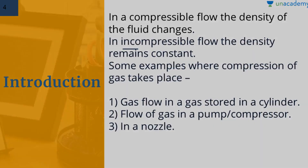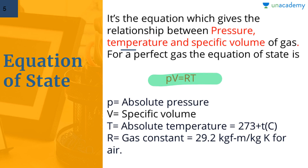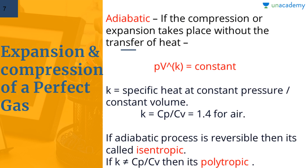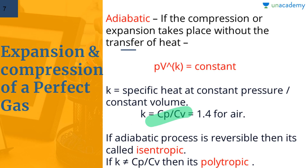To summarize: for a perfect gas we have the relationship PV = RT, where T is in Kelvin (273 + °C) and R = 29.2 kgf or 287 J/kg·K. An isothermal process obeys Boyle's Law: PV = constant. The adiabatic process follows PV^K = constant, where K = Cp/Cv = 1.4 for air.